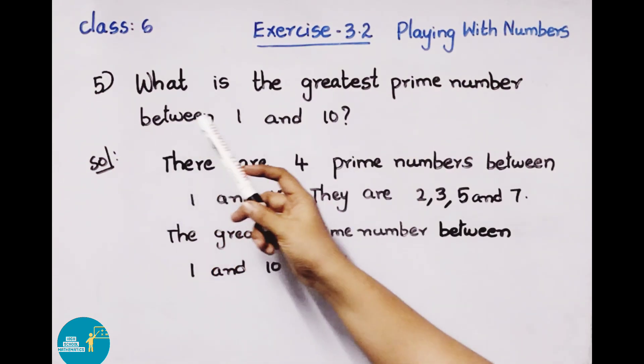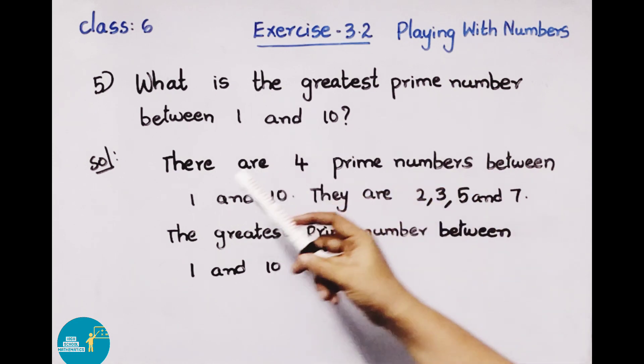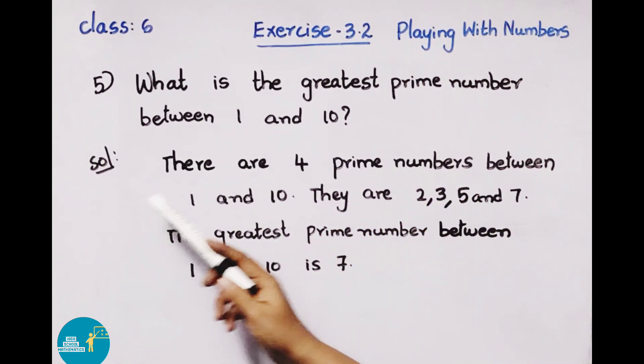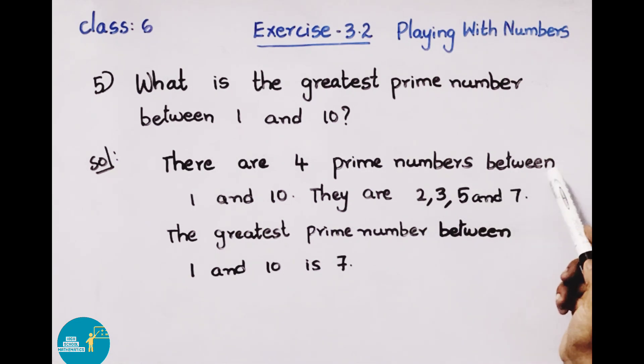Fifth question: What is the greatest prime number between 1 and 10? Solution: There are 4 prime numbers between 1 and 10. They are 2, 3, 5, and 7. Of these 4 prime numbers, the greatest one is 7. Therefore, the greatest prime number between 1 and 10 is 7.